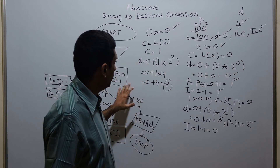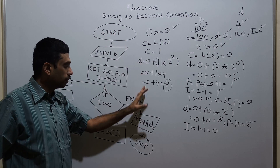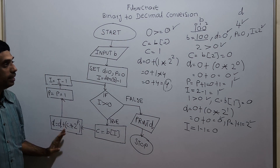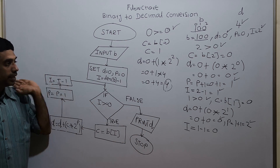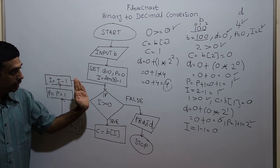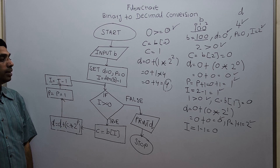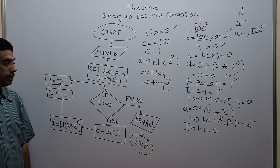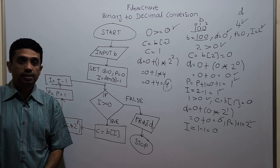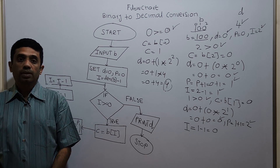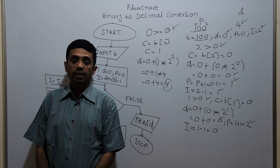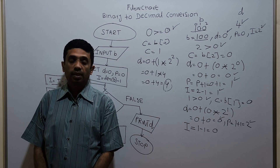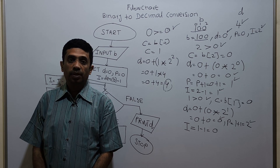My flowchart is working perfectly. This flowchart will work for any kind of binary number and convert it into the equivalent decimal number. That's it. Thanks for watching this video. Please subscribe to my channel, share, comment, and press the bell button. Thank you.